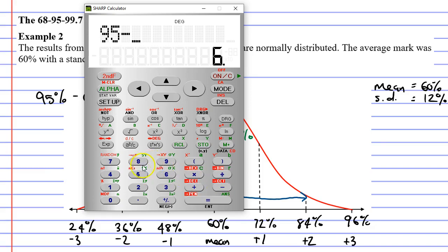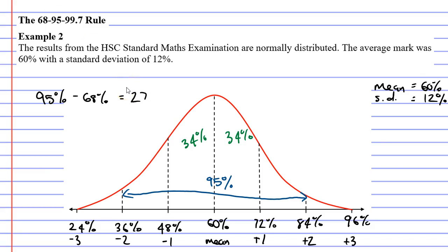95 minus 68 is 27%. Now we need to divide this by 2. 27% divided by 2 is 13.5%. So we can label these outer sections as 13.5%, like so. And now we can get rid of the area that's talking about the 95%. The reason we can get rid of it is because we've got our four sections individually labelled.